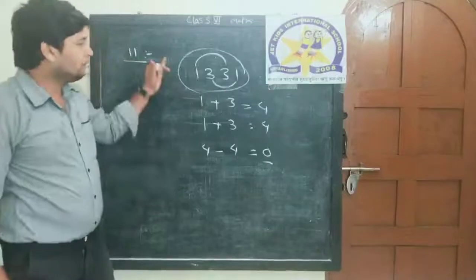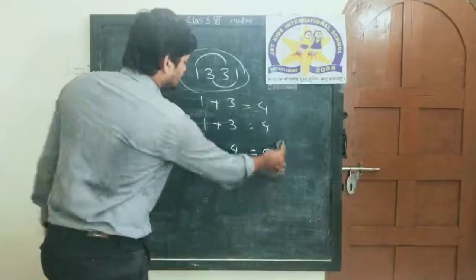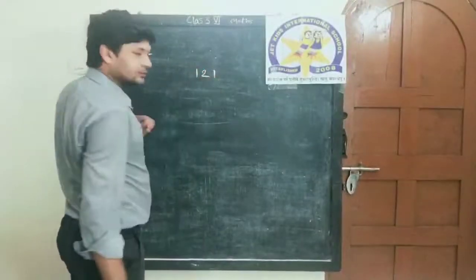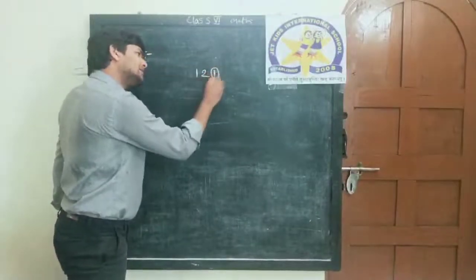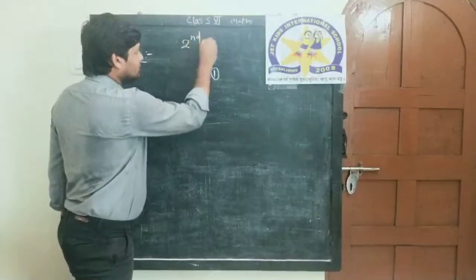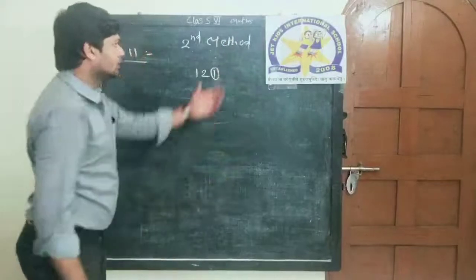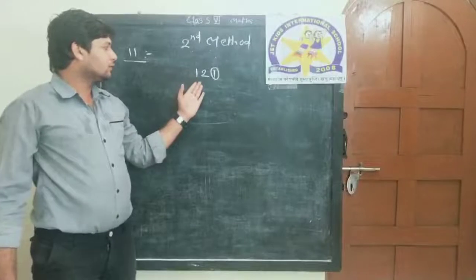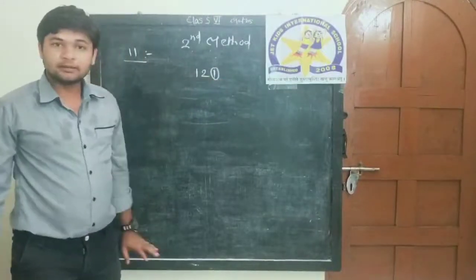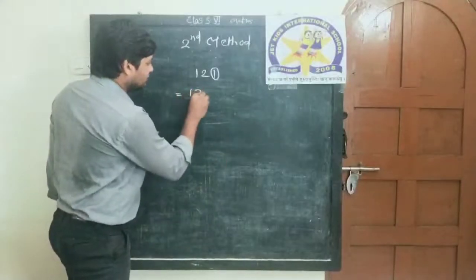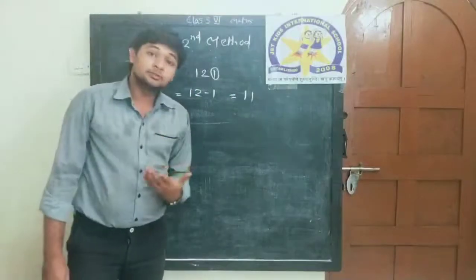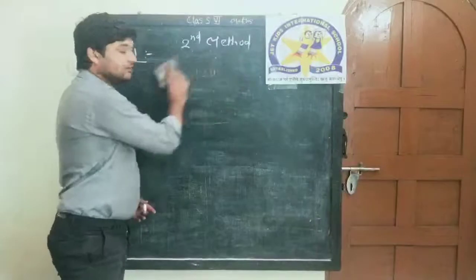I have one more trick — it is not in your book. This is the second method for the divisibility test of 11. For 121: you subtract the unit digit from the remaining part of the number. The unit digit is 1, and the remaining part is 12. So 12 minus 1 equals 11. If the remaining result is divisible by 11, then the whole number is divisible by 11.